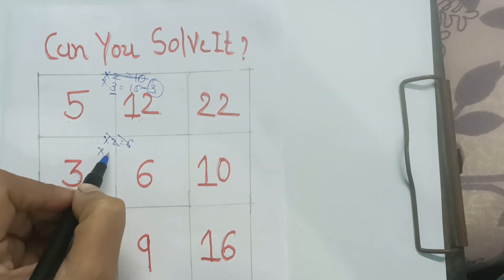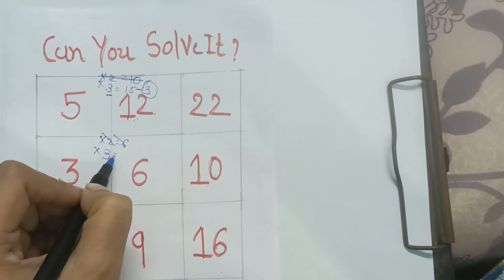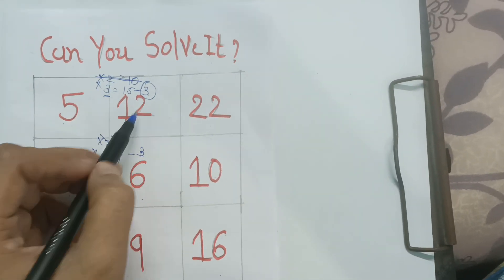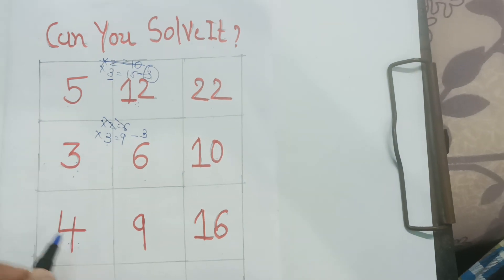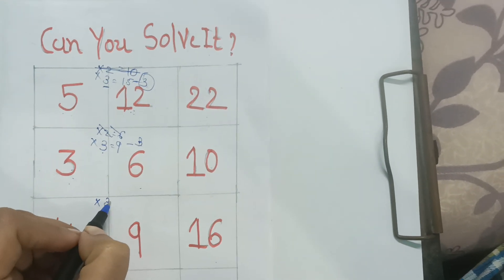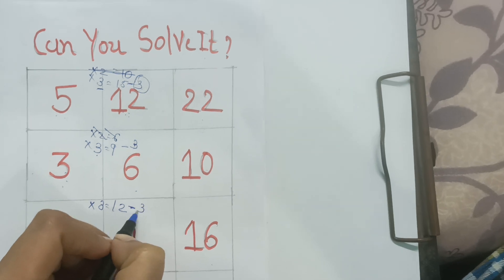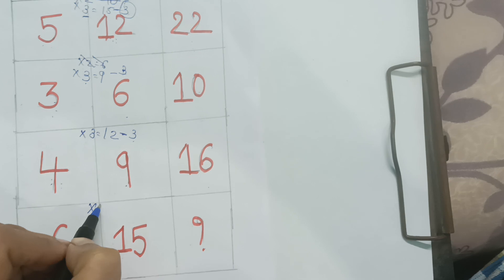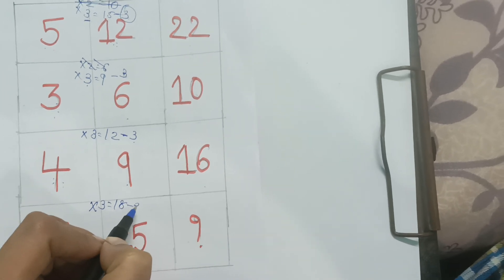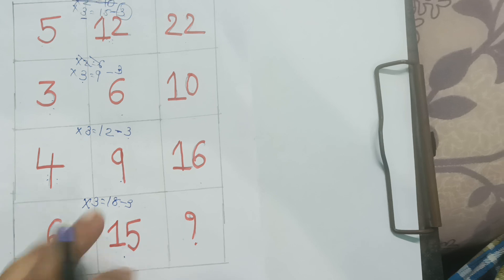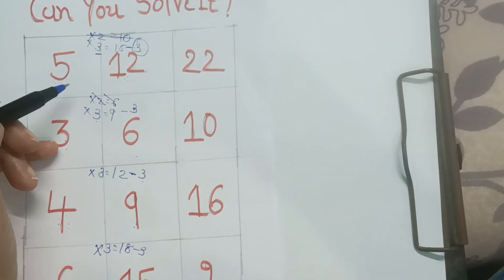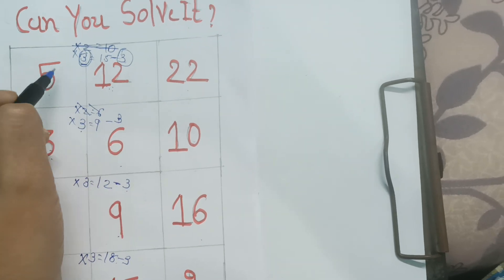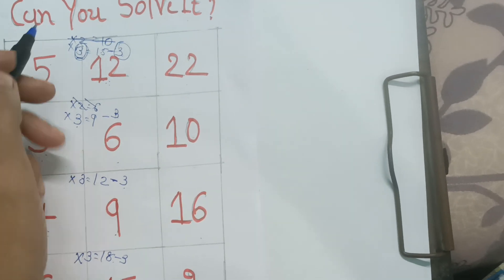Three times three is nine, and minus three gives us six. Here we deduct three to get twelve. Four times three is twelve, then minus three gives us nine. Six times three is eighteen, and minus three gives us fifteen. So what is the pattern? The trick is: multiply by three then deduct three — and the number we deduct matches the multiplier used.